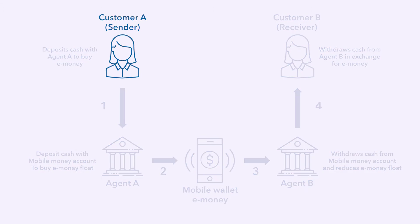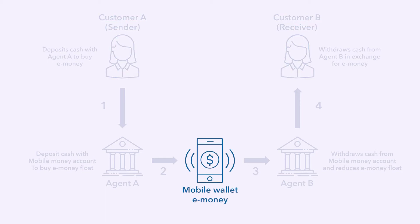Suppose person A wants to move money to person B. Person B also needs a mobile wallet or a bank account, if the mobile banking firm allows payments directly into bank accounts. The application will ask who the money is going to — sometimes just the name and their phone number is enough — and then how much to send. Press a button and the money goes to their account.